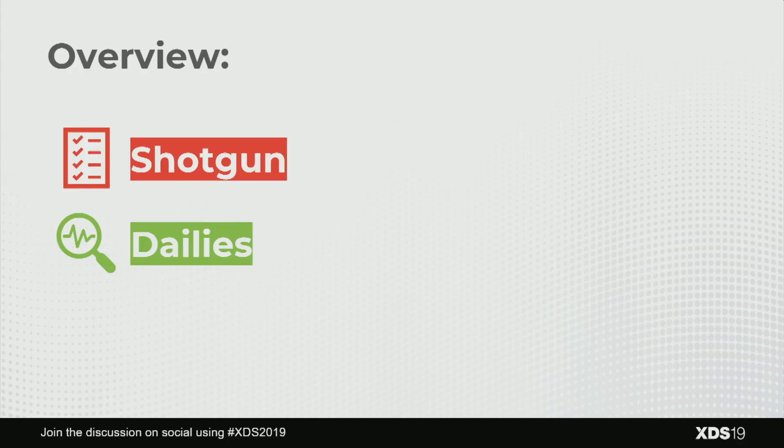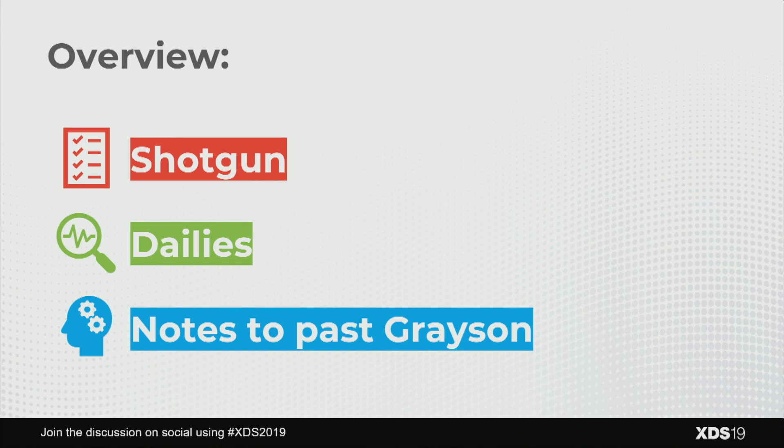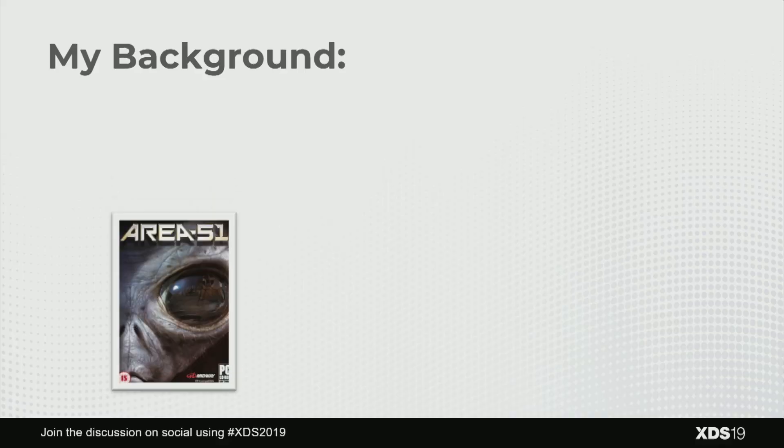Whether you're considering using Shotgun or already using it, there are things that will help make it more effective. Dailies is the next topic — it's an effective way to give feedback in a fast and efficient way. The last topic is notes to past Grayson: looking back, what would I change going forward? These are the kinds of things I would tell my future and past self.